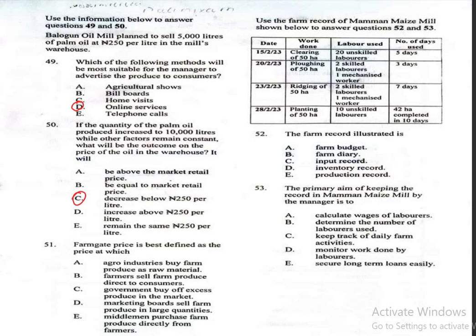Question 51: Farm gate price is best defined as a price at which A, agro-industries buy farm produce as raw material; B, farmers sell farm produce direct to consumers; C, government buys excess produce in the market; D, marketing boards sell farm produce in large quantities; E, middlemen purchase farm produce directly from farmers. The correct answer is option E, middlemen purchase farm produce directly from farmers.